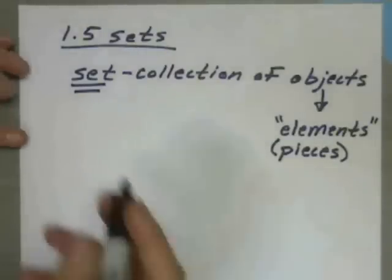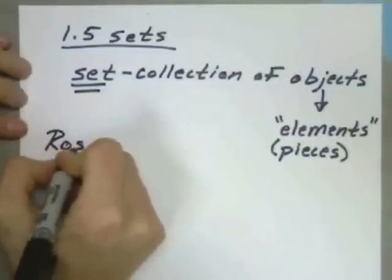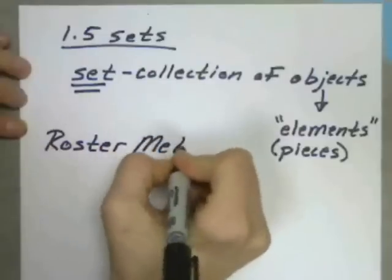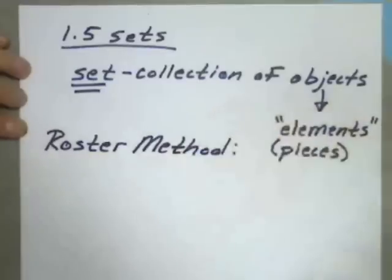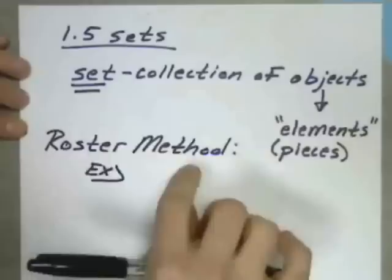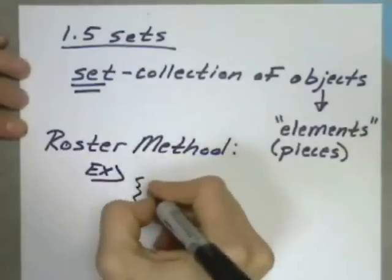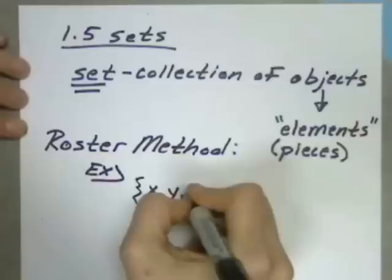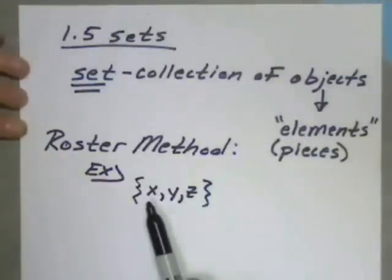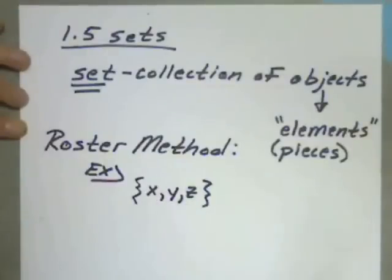So first, starting with the roster method, let's explore that. So here's our first example of a set, and it's going to be within this category of roster method, and I'll show you why. X, Y, Z. So what this means here is that whatever I'm referring to, whatever group it is I'm talking about, the pieces or the members of the group include X, Y, and Z.